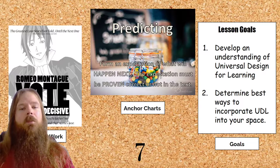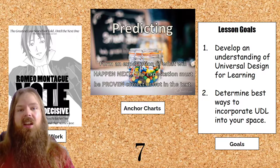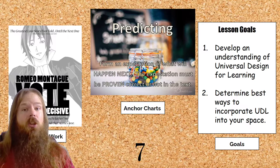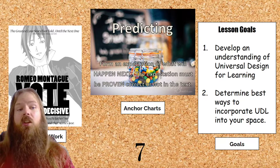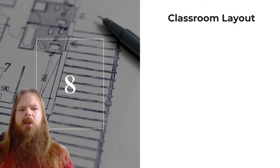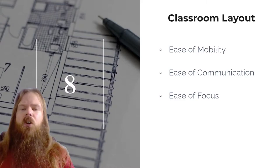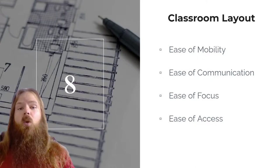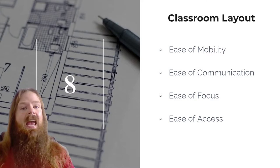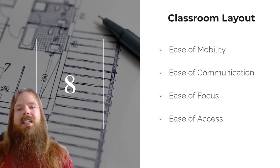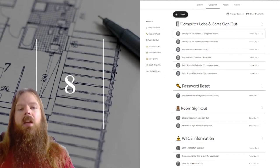And finally, the lesson goals. You want to make sure that your lesson goals are proudly displayed in the classroom so that students know what they are doing isn't for no reason at all. Because when students understand that the teacher knows what they are doing, they are far more likely to engage with that learning activity. Now let's talk about classroom layout. We want to make sure that there is an ease of mobility, ease of communication, ease of focus, and ease of access. All of our students must be able to get around the class, and even if new students are added later in the year, changes don't need to be made midstream.